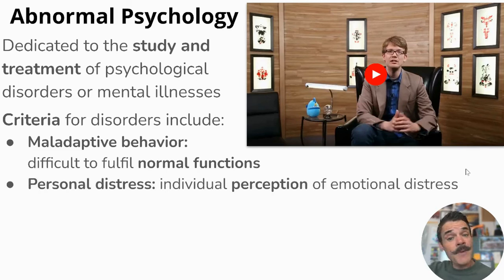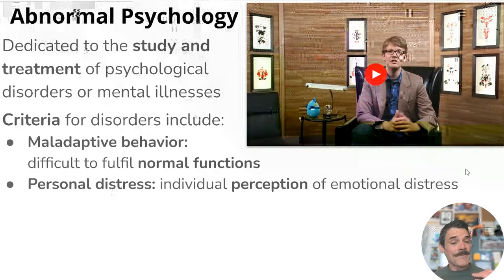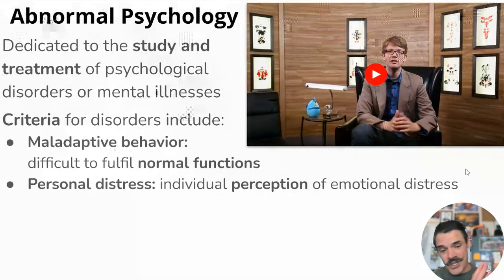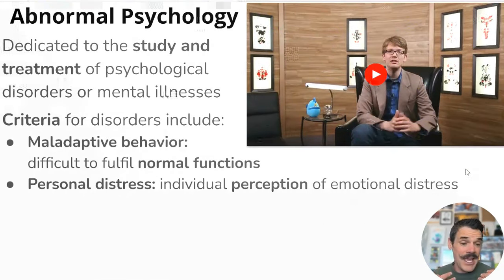Personal distress is the second criterion. It's an individual's perception of their emotional distress — perception is reality in a lot of ways. A teenager's perception of what is emotionally distressful is going to be different than mine as a 42-year-old guy with a mustache.